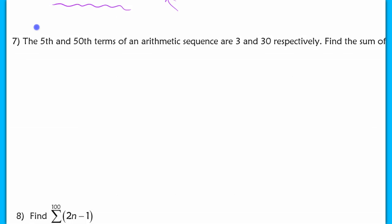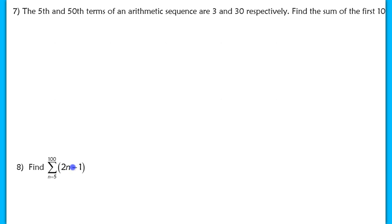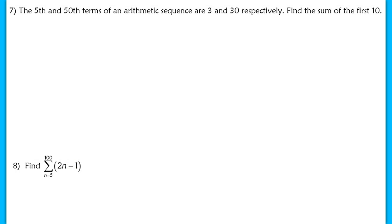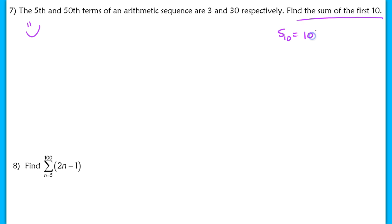Question 7 is my favorite on this whole note sheet. The 5th and 50th terms of an arithmetic sequence are 3 and 30 respectively — find the sum of the first 10 terms. So S_sub_10 is what I'm finding. I know the number of terms is 10, but I'm lacking a_sub_1 and a_sub_10. I need to go back to what I've been given. A_sub_5 equals 3 and a_sub_50 equals 30. This is a system like we worked on the front side of your notes.